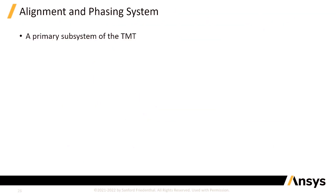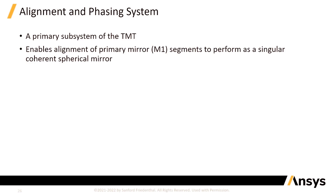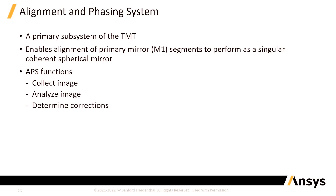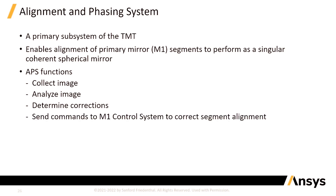Let's take a look at the alignment and phasing system. It's a primary subsystem of the 30-meter telescope, and basically it's used to align the primary mirror segments such that they perform as a singular, coherent, spherical mirror. The functions it performs: it collects the image, analyzes the image, determines corrections, and then sends commands to the M1 control system, which in turn actually controls the segment alignment.